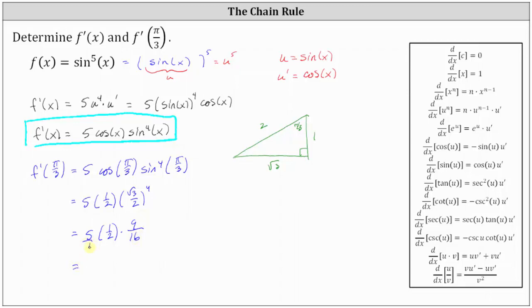Multiplying, in the numerator, we have five times one times nine, which is 45. In the denominator, we have two times 16, which is 32. F prime of pi divided by three equals 45 32nds. I hope you found this helpful.